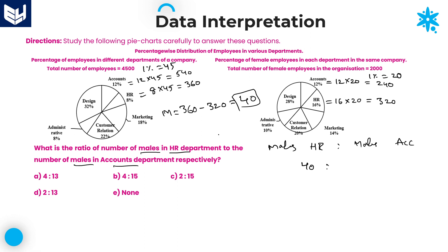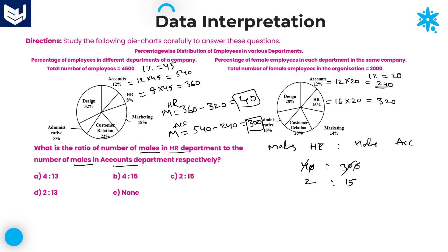Now calculate male HR: total HR 360 minus female HR 320 = 40 males in HR. For accounts: total 540 minus female accounts 240 = 300 males in accounts. The ratio of males HR to males accounts is 40 to 300. Cancelling zeros, that simplifies to 2 is to 15. Option C is the right answer.